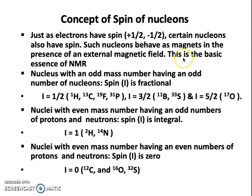When nucleons are placed between the poles of a magnet or in the presence of an external magnetic field, the protons, because they are magnets, start to align either in the direction of the magnetic field or against it. The externally applied magnetic field splits the protons based on how they are aligned. This is the basic essence of NMR.